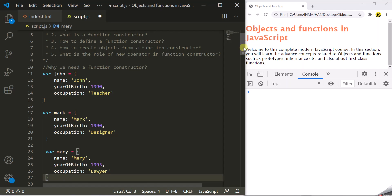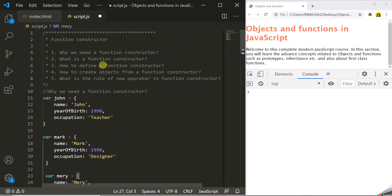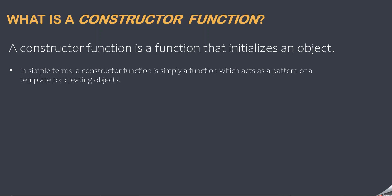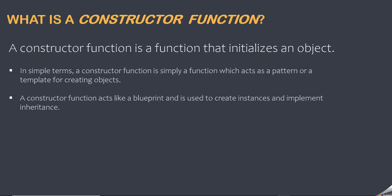Let's now answer our second question: what is a function constructor? A function constructor, or constructor function, is a function that initializes an object. In simple terms, it is a function which acts as a pattern or a template for creating objects. A constructor function acts like a blueprint and is used to create instances and implement inheritance.